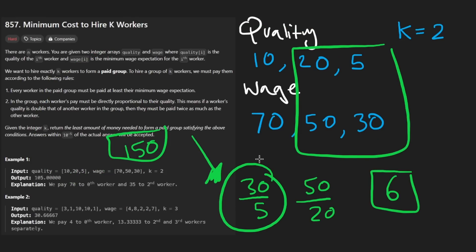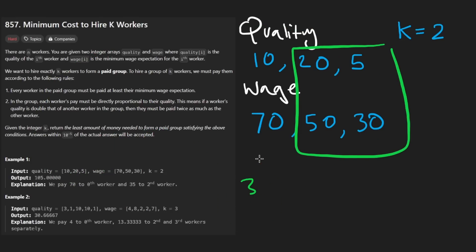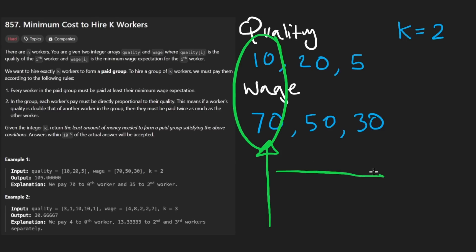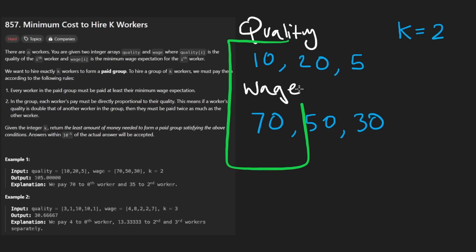So now all of this has helped us get some intuition for the problem. But how do we actually solve it? Let's start with a brute force approach. Suppose we just start at the beginning of these arrays and iterate going one direction. So we get to this first person and calculate what the rate is — it's 70 over 10, so it's seven.